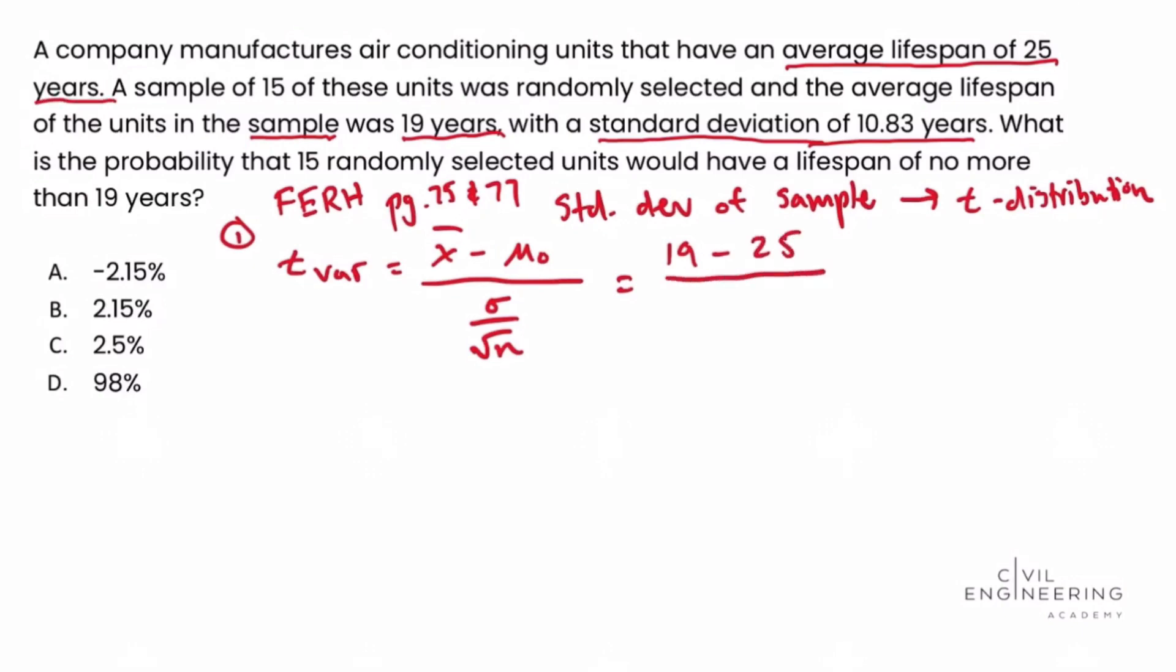Then in the denominator, we will look at the standard deviation. And so the standard deviation was given as 10.83 years in the problem statement. And then that will be divided by n, which is the sample size. And it says that the sample size in this case was 15 units, so that's the square root of 15. So we work this out, and we get a T value equal to negative 2.145.